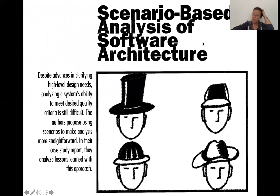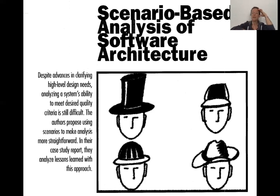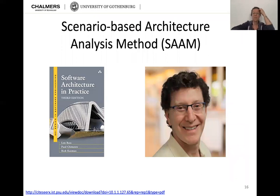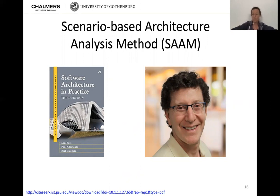The reading we're getting to today is the scenario-based analysis of software architecture, an article by Rick Kazman and colleagues. Despite advances in clarifying high-level design needs, analyzing a system's ability to meet desired quality criteria is difficult. The authors propose using scenarios to make analysis more straightforward, and in their case study report they analyze lessons learned with this approach. Rick Kazman is most well known for co-authoring Software Architecture in Practice with Lynn Bass and Paul Clements.